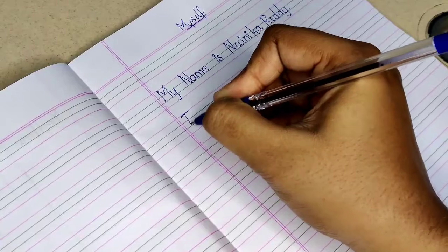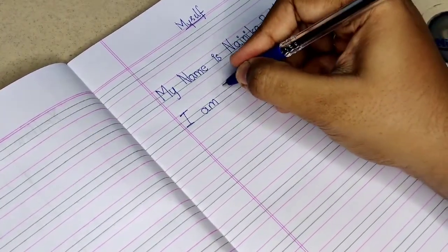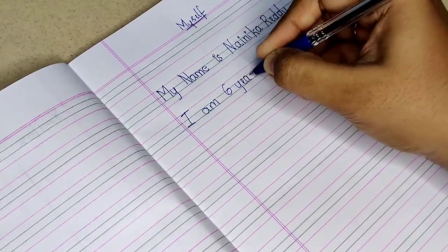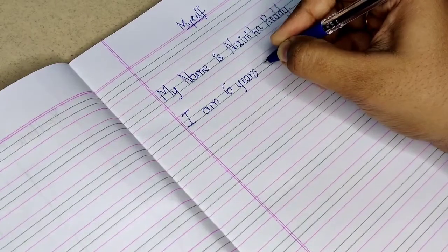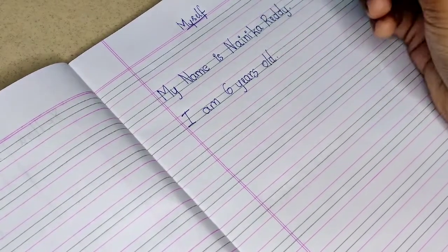My name is Nainika Riddhi. I am six years old. I am a girl. I am in UKG. I study in Sahiti School. My favorite color is red. I live in Hyderabad. These are the simple sentences that your child can learn very easily.